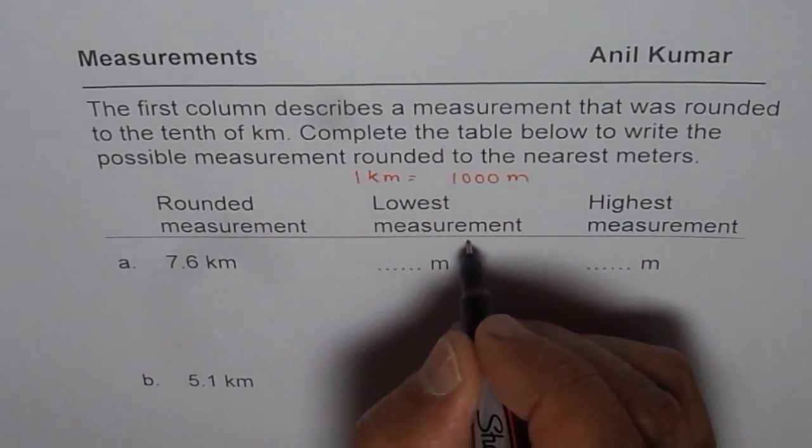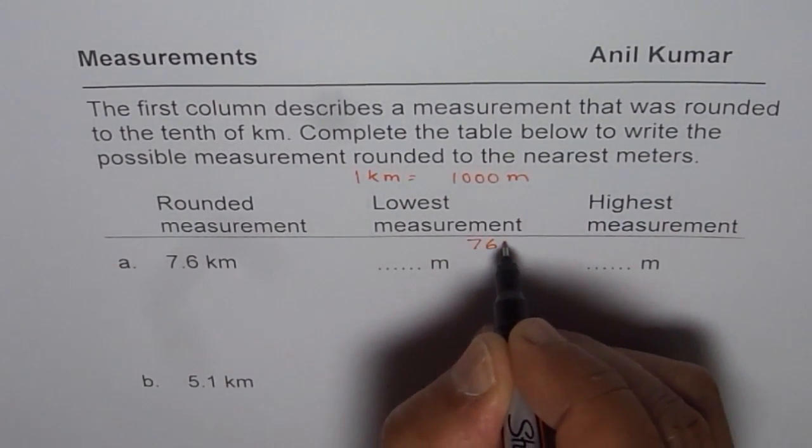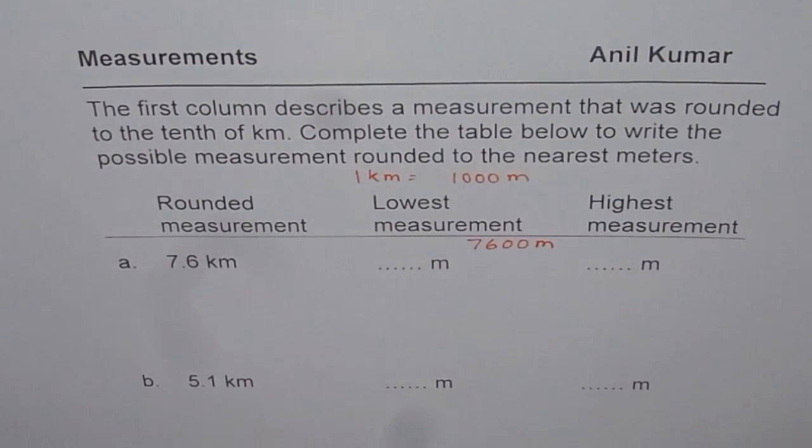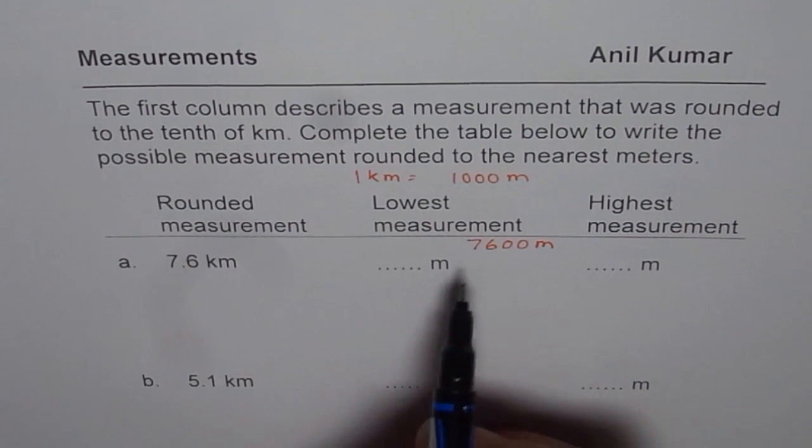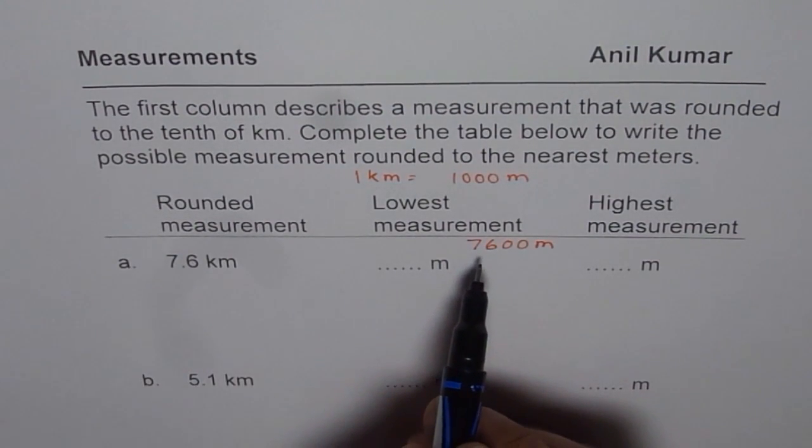So let's begin by thinking like this. 7.6 kilometer is 7,600 meters. So what could be the measurement which rounds to this? So that is what we can think about.